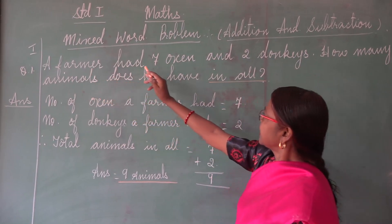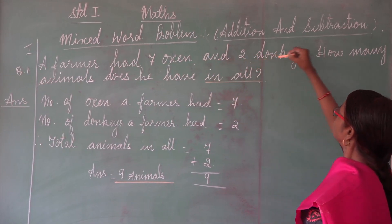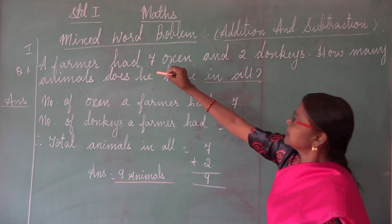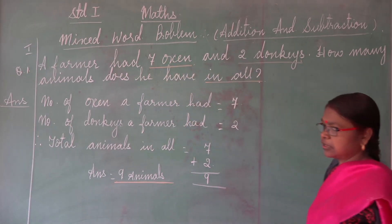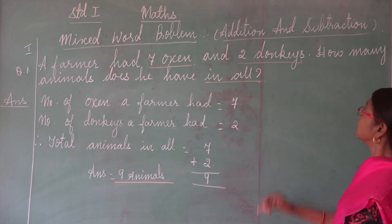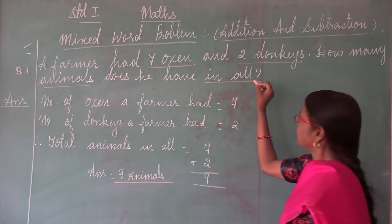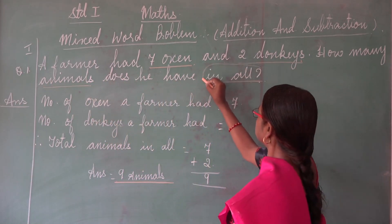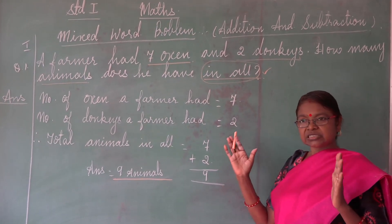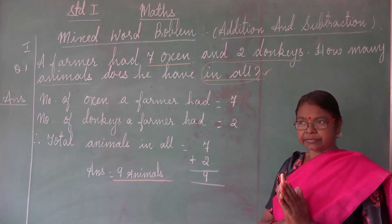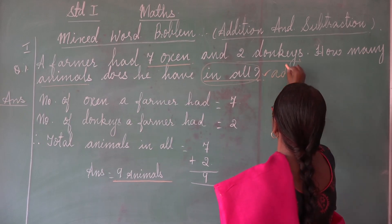Now focus on the word problem. A farmer had seven oxen and two donkeys. There are two kinds of animals. How many animals does he have in all? Now this phrase 'in all' means all together — combine it. In all means you have to add.